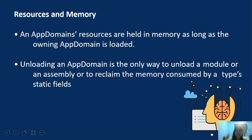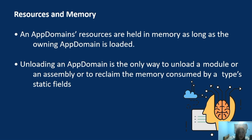Regarding resources and memory: an app domain's resources are held in memory as long as the owning app domain is loaded. Unloading an app domain is the only way to unload a module or assembly or to reclaim the memory consumed by static fields. When you have finished using an application domain, you can unload it using the AppDomain.Unload method. During unloading, no new threads can access the application domain, all data structures are freed, and assemblies loaded into it are removed. If an assembly is domain-neutral, its data may remain in memory until the entire process is shut down, and there is no mechanism to unload domain-neutral assemblies other than shutting down the entire process.